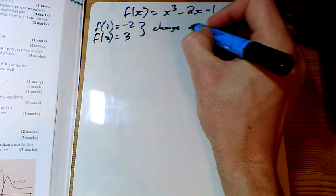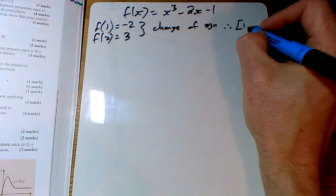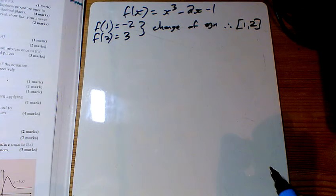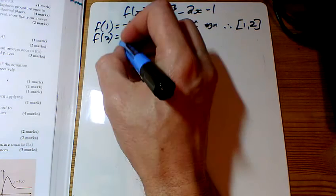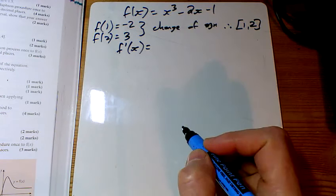And the usual thing here: change of sign, therefore a route in the interval of 1 to 2. But the main part of this exercise is to use the Newton-Raphson method, and the Newton-Raphson method involves differentiating the original function.